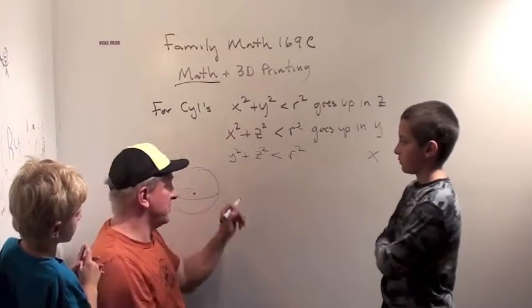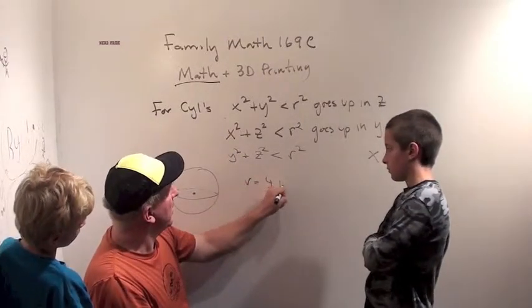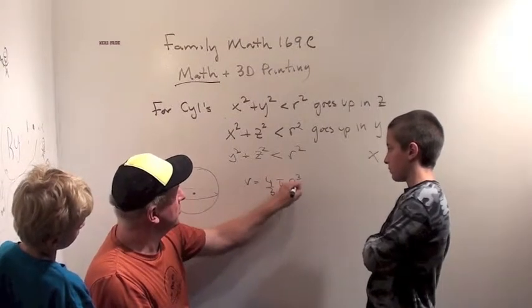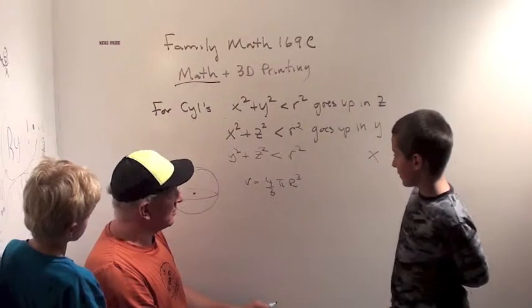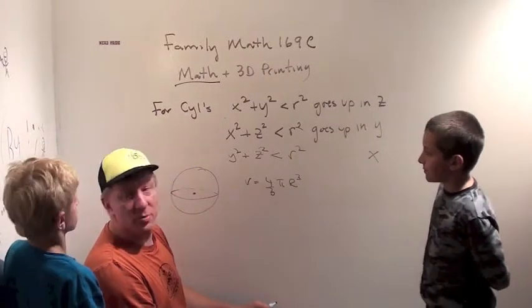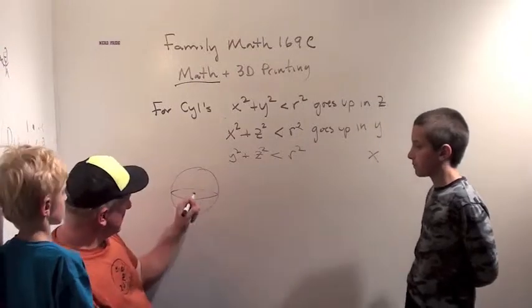The volume of the sphere, just for fun, is four thirds pi times the radius cubed. Whoa. Whoa. That's a little more complicated than pi r squared. A little more complicated than pi r squared, but not super more complicated. No. But we have to figure out these constraints.